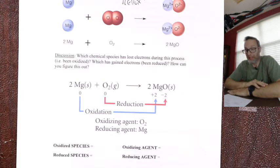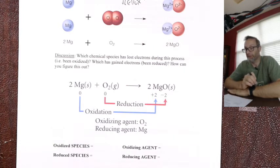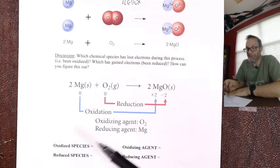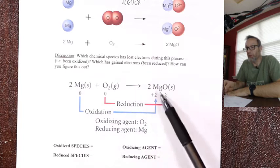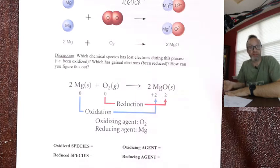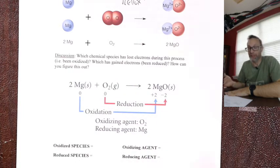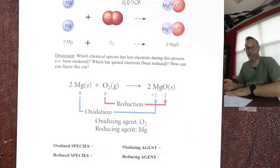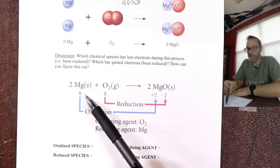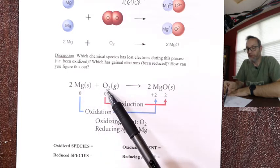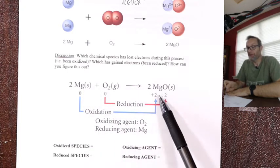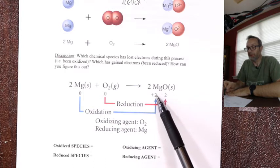Always remember oxidation is loss, reduction is gain. The best way to think about this is to consider what the charge on these things is — we call that the oxidation state. For simple ions, the charge is the oxidation state. For an atom or molecule made of two identical atoms, no charge — oxidation state zero. Then magnesium goes plus 2, oxygen becomes oxide minus 2.